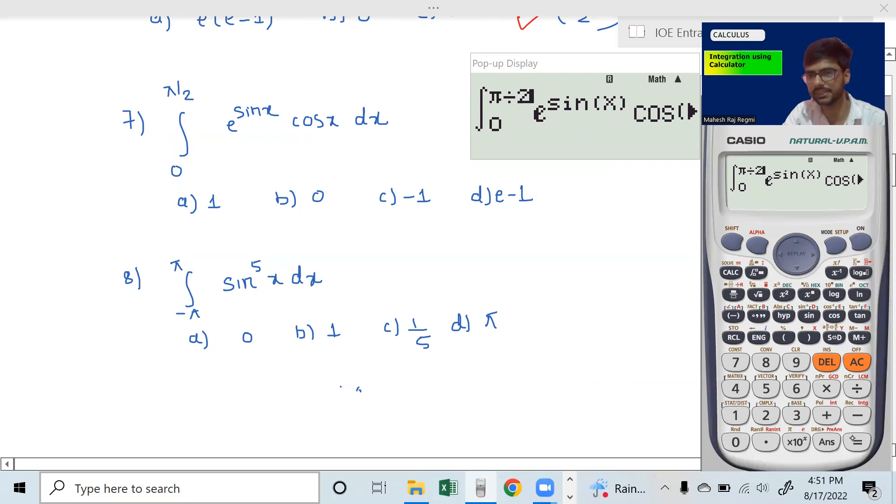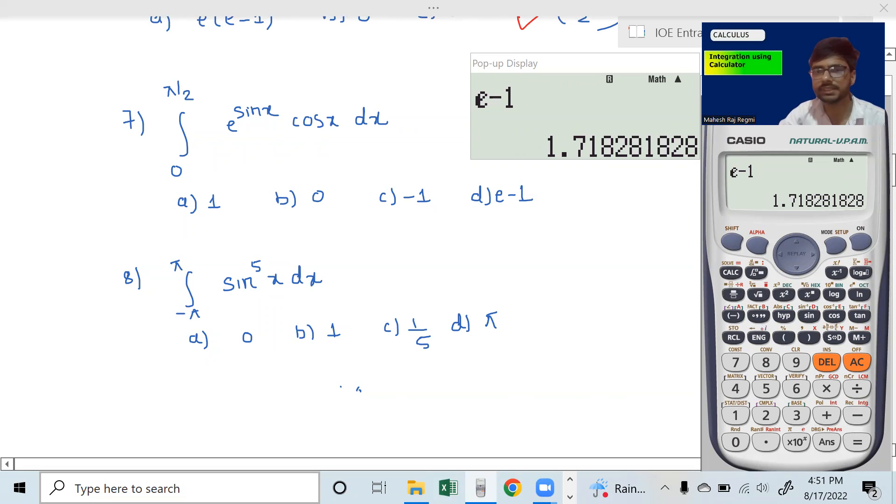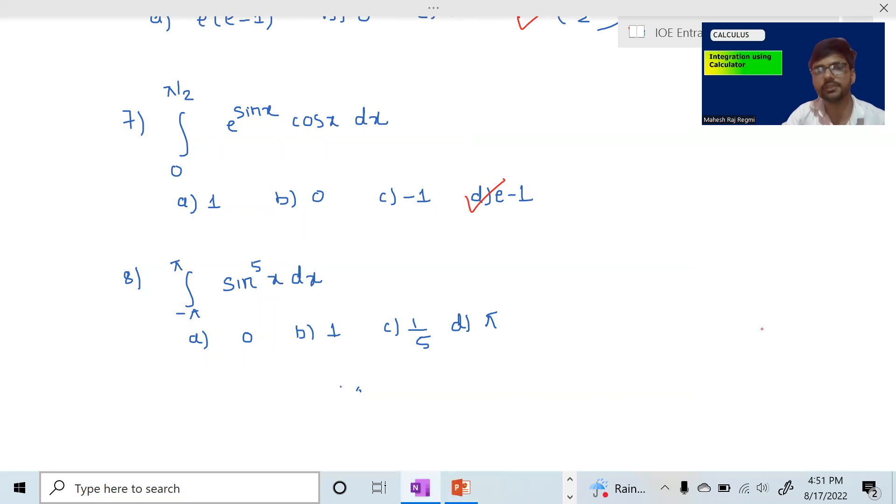1 power x gives 1.718. E minus 1 gives 1.718. This is the answer by D.